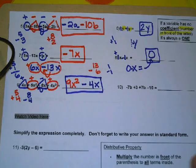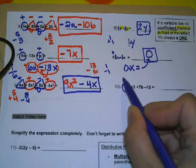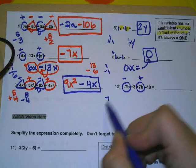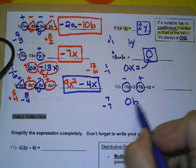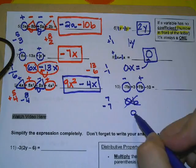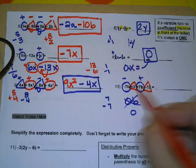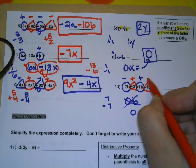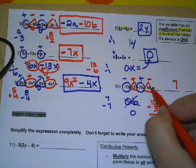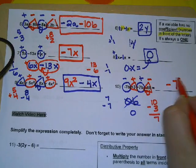For the last example, we have like terms 7B and negative 7B. They have different signs so we subtract: 7 minus 7 is 0B, and 0 times anything is 0. Then we handle the constants 3 and negative 10 — they have different signs so we subtract: 10 minus 3 is 7, and since 10 is larger with the negative sign, the final answer is negative 7.